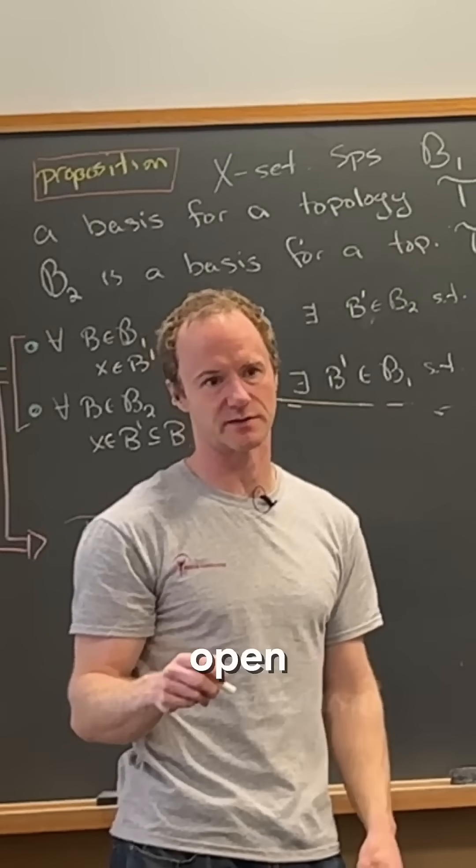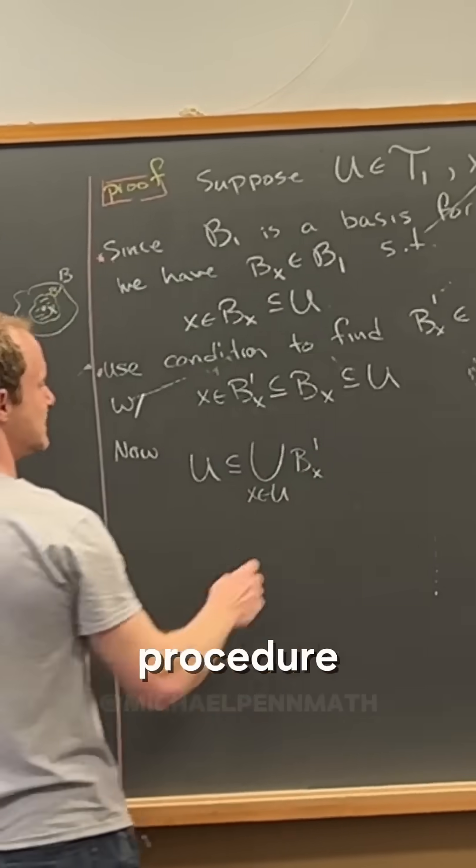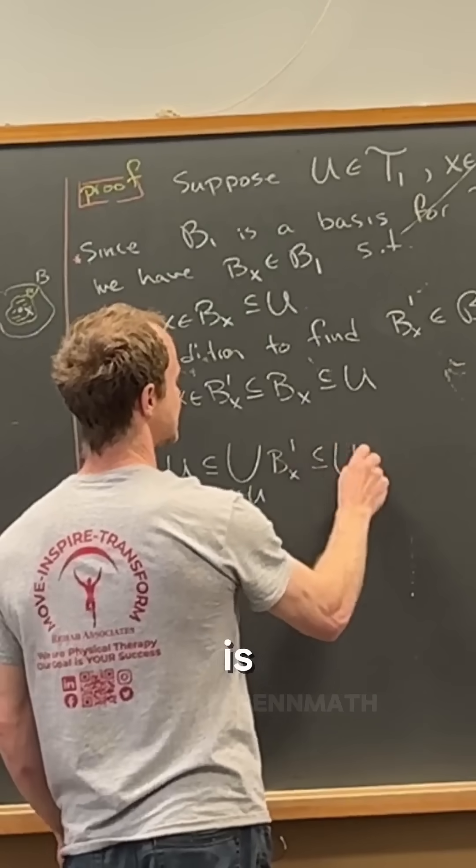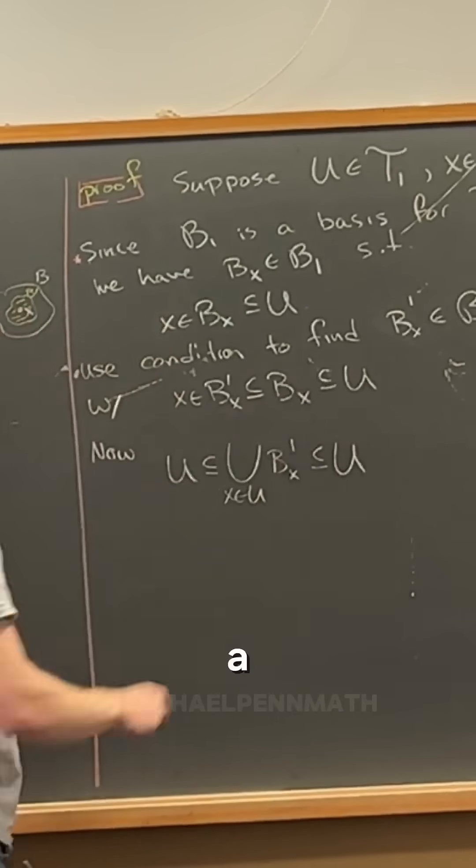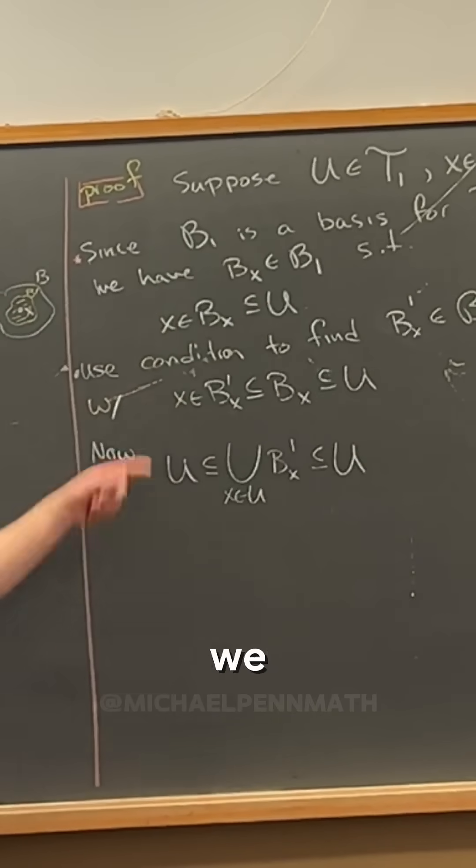But now observe that this is a subset of U because it's just a union of a bunch of subsets of U from what we have right here.